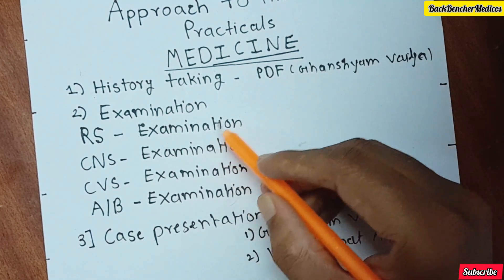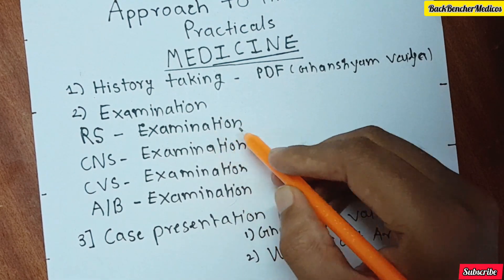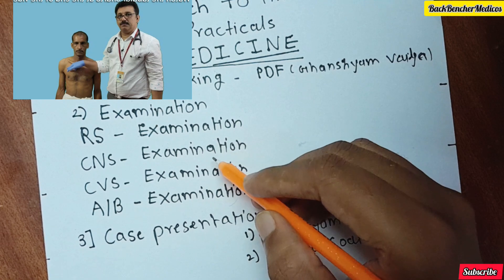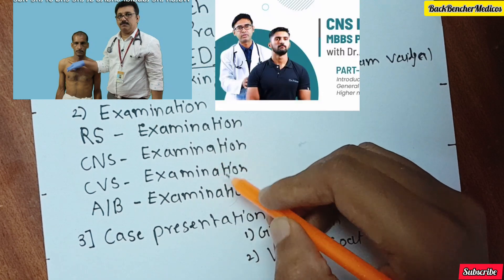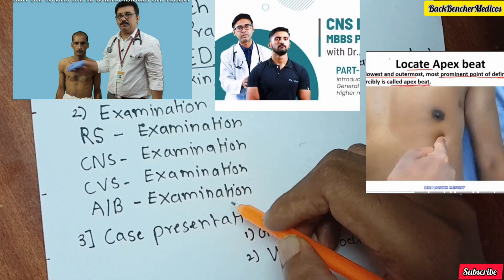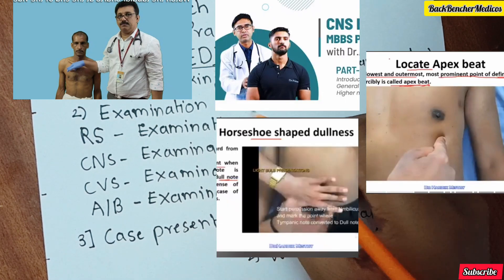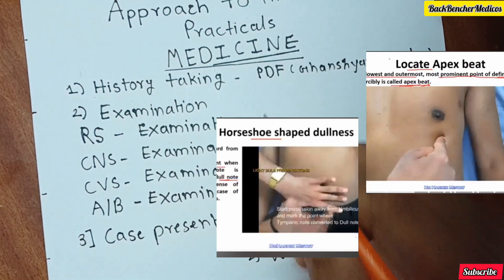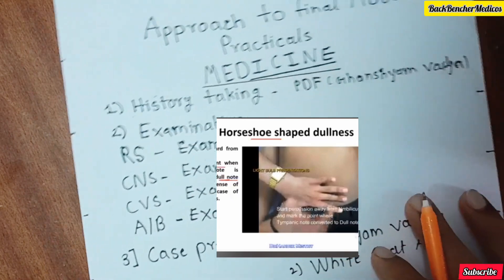All four examination systems are covered: respiratory system, central nervous system, cardiovascular system, and abdominal examination. All the video links for these are given in our description.